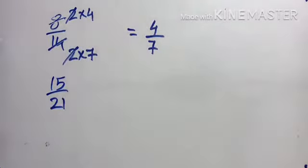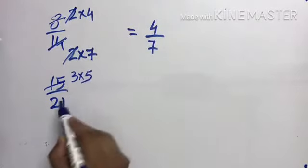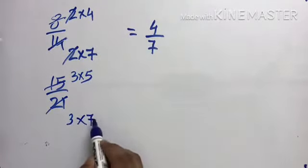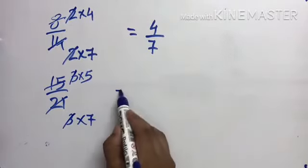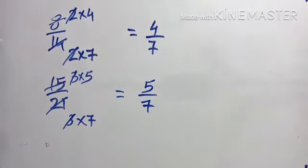This is a fraction. You know 3's table, right? 3 times 5 is 15, 3 times 7 is 21. Same, 3 and 3. 5 by 7, 3 and 3 cut. What's left? 5 by 7, understood?